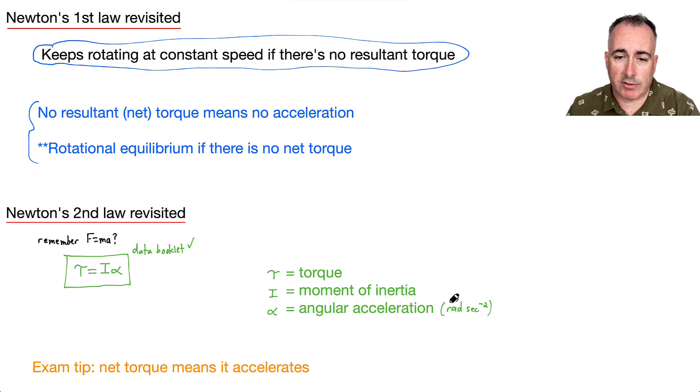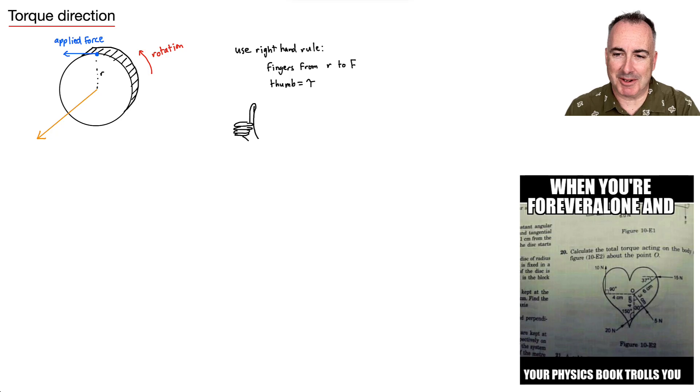What about moment of inertia? If you remember, it's MR squared or some sigma of that. So it's going to be kilograms times meters squared. And torque, of course you could do it in these units here. But remember torque was the same thing as F times R. So it's Newtons times meters, it's in Newton meters here. Here's a nice little tip here for exams, is that a net torque means it accelerates. I'm just repeating this. It's really important. So if it's a net torque, it's going to have an angular acceleration. I put this one here because when you're forever alone and your physics book trolls you, calculate the total torque acting on this. Oh God, this complicated looking heart.